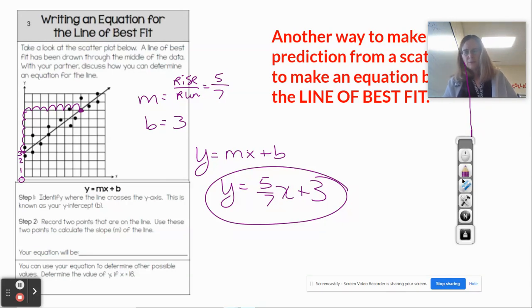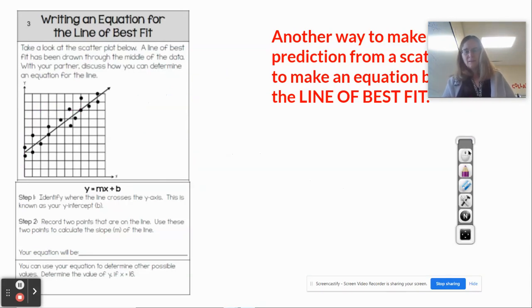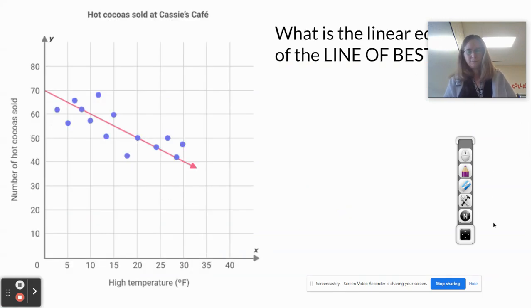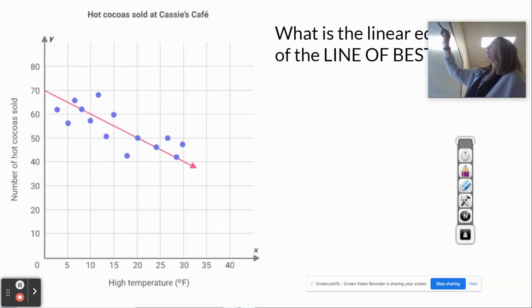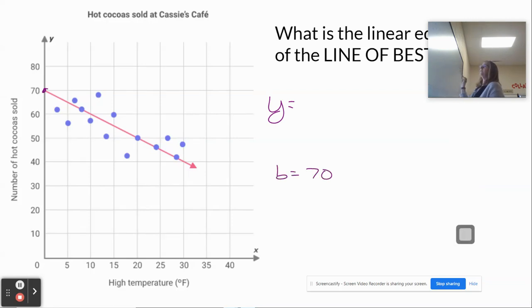And I'll show you how to use the line of best fit equation to make a prediction as well. All right, so here. So this equation would be our y-intercept. Our y-intercept is 70.